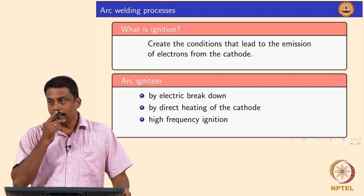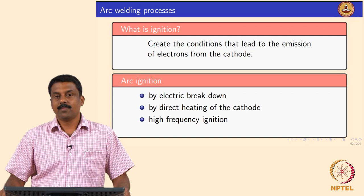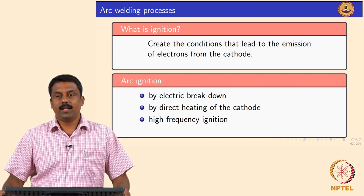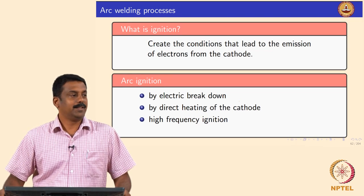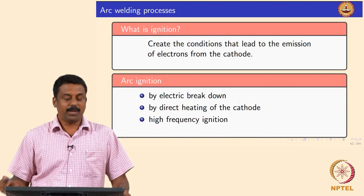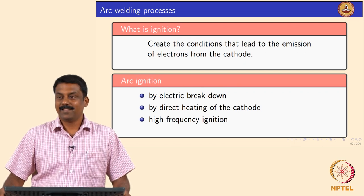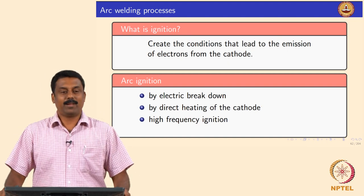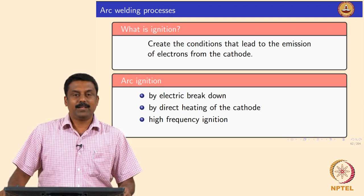In all cases, ignition means triggering electron emission from the cathode. This can be done by electric breakdown, direct heating for thermionic emission, or high frequency ignition — all three methods are commonly used. For example, a welder will touch the electrode to the base material — short circuiting — which is actually using the second method (direct heating/Joule heating) to ignite the arc. The first method, electric breakdown, is a bit more complex but is also widely used.